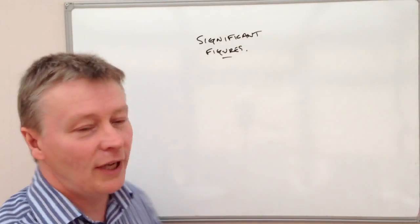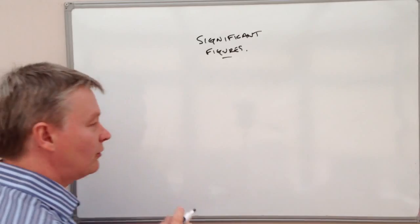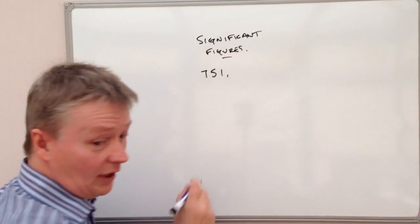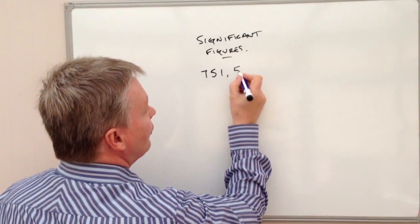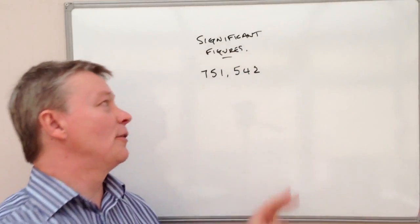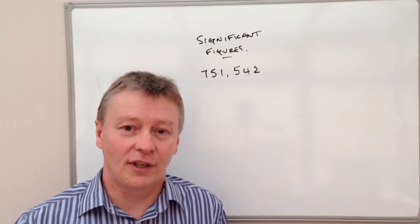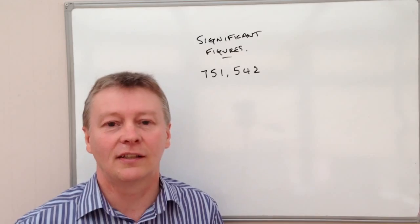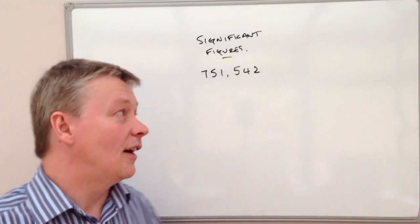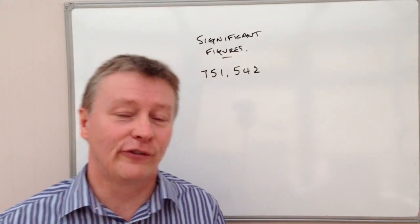Okay, and what we mean by that, if we look at something like this, so I'm going to write down a number, and the number is 751,542. Okay, that particular number represents the population of the city in which I live in, which is Leeds in the UK. So in Leeds, in the UK, I live in a city which has 751,542 people.